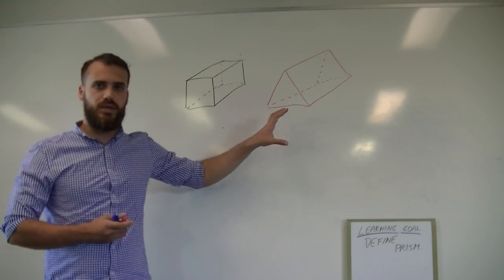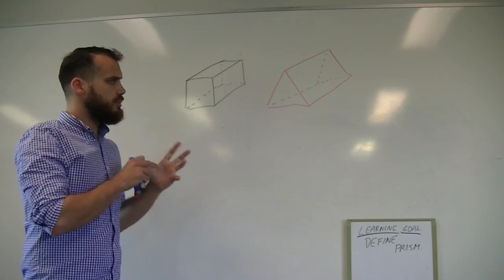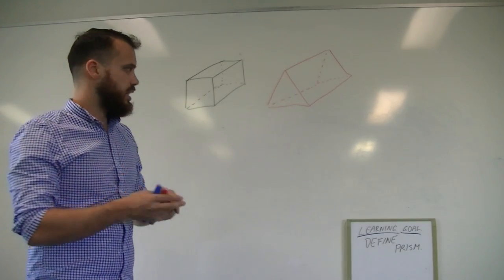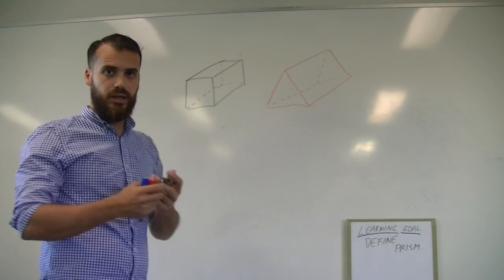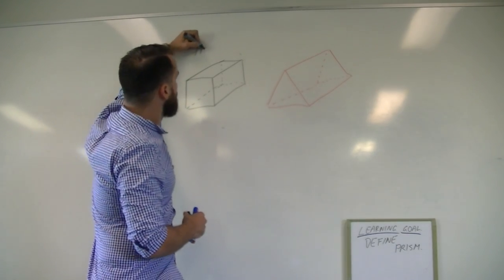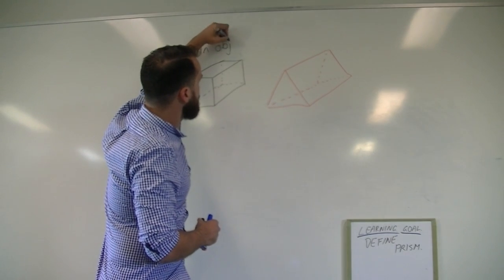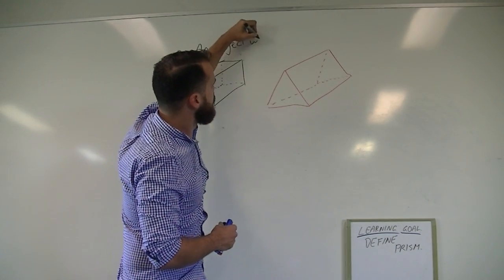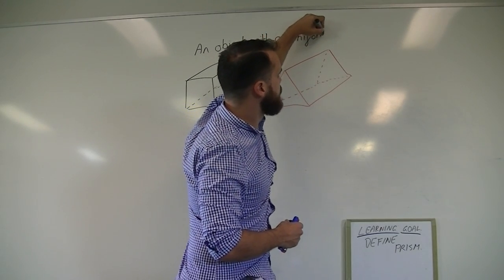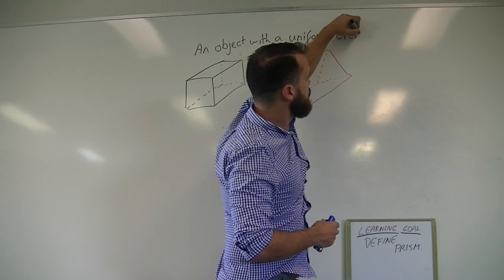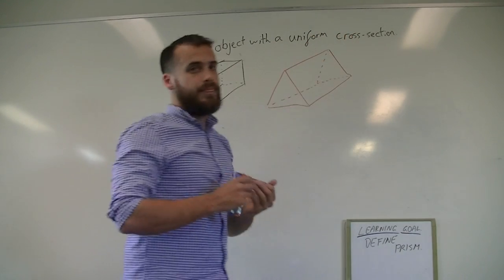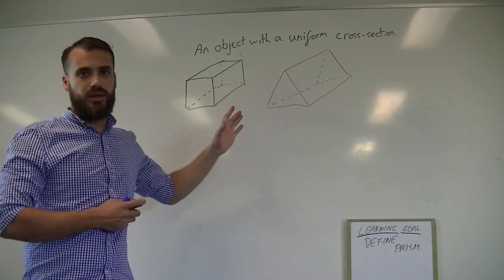You can see a triangular prism here as well. Now, what is a prism? A prism is an object with a uniform cross section. So that's our technical definition.